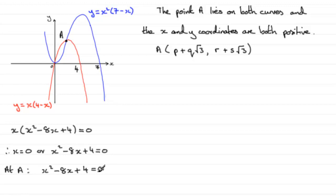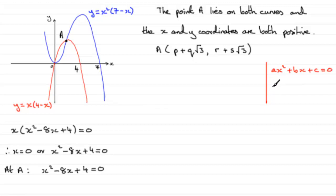To solve this quadratic equation, normally I would want to factorize it. But looking at the type of answer expected — with a square root — this doesn't suggest it will factorize. It suggests we need the quadratic formula. As a quick reminder: for ax squared plus bx plus c equals 0, x equals minus b plus or minus the square root of b squared minus 4ac, all divided by 2a.